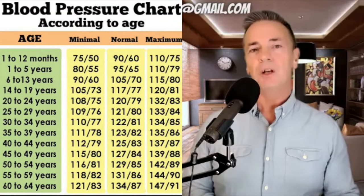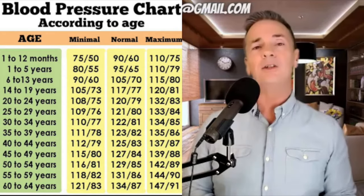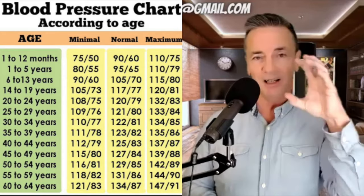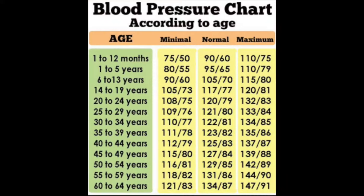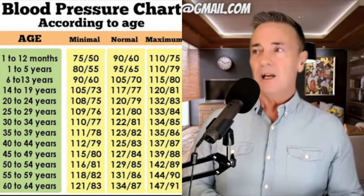We shouldn't all have the same blood pressure. Before the 1950s, blood pressure tables were age-related, because as you get older, arteries stiffen up and are less elastic — more pressure is needed to push blood through. So readings of 120 over 80 don't really relate to the aging population, who should theoretically have slightly higher blood pressure, while younger people with elastic arteries should have slightly less.